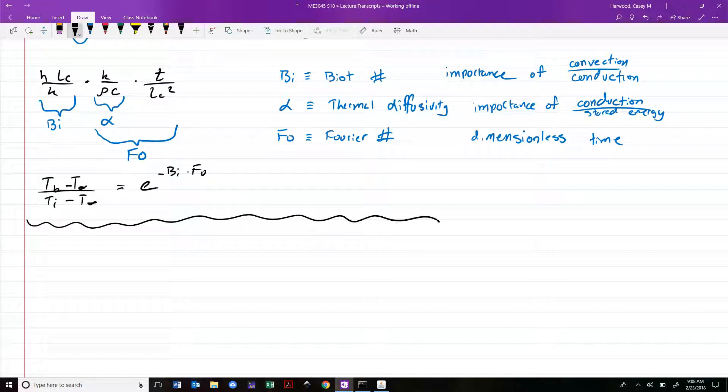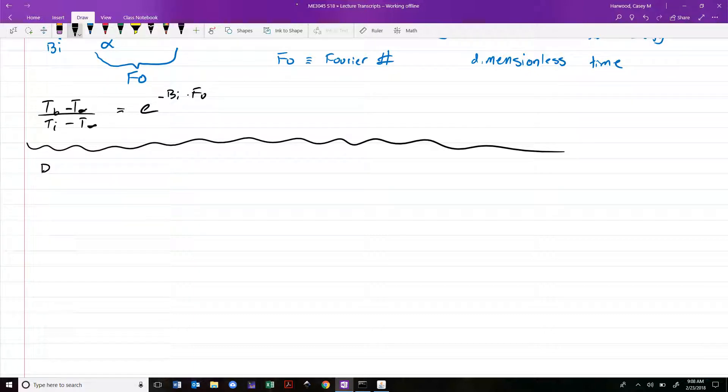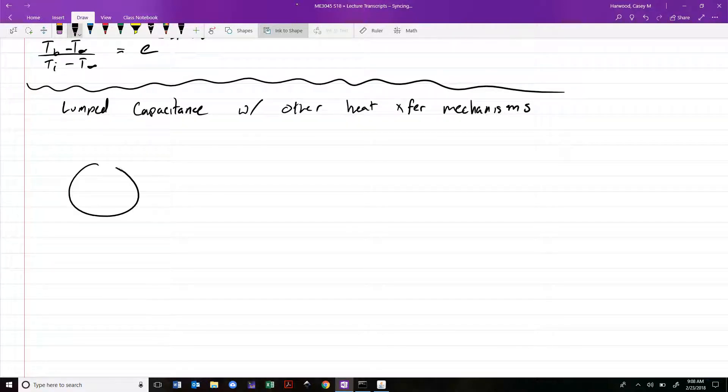We'll probably have to continue this later, but I want to discuss quickly lumped capacitance with other heat transfer mechanisms. Suppose we take some hot piece of metal - I know we keep falling back on this example, it's a good one. We take some hot chunk of metal fresh out of the forge and place it into a cooling chamber. How in general is cooling going to occur?